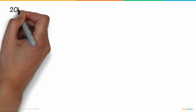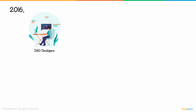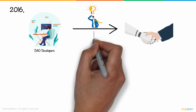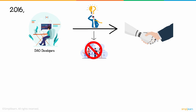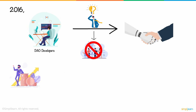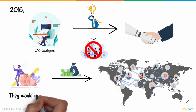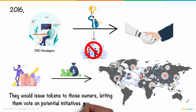Sam further added that back in 2016, the developers of the DAO believed that by putting decision-making power in the hands of automated technology, that would eliminate the decision-making power driven by an individual or body. It was created to allow investors to send money anonymously from anywhere globally, and they would issue tokens to those owners, letting them vote on potential initiatives or proposals.